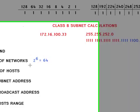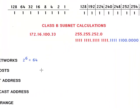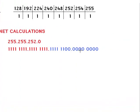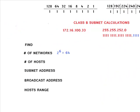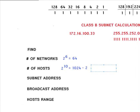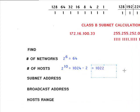Each network is going to have a certain number of hosts. To find how many hosts are available, you count the number of zeros: one, two, three, four, five, six, seven, eight, nine, ten — so it's two to the power of ten, which gives you 1024. We cannot use two of those addresses, so we subtract two, giving us 1022 hosts per network. So you can have 64 networks with 1022 hosts available.